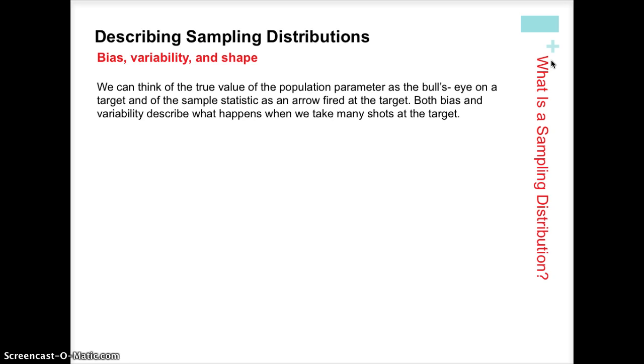As we continue to talk about the idea of bias, variability, and shape, we're going to think of the population parameter as a bullseye, the target that we're trying to estimate. If we are trying to estimate the average height of the 750 high school students at North Broward, then we will take a sample and find the average height of our sample. Let's say we take a sample of 70 students.